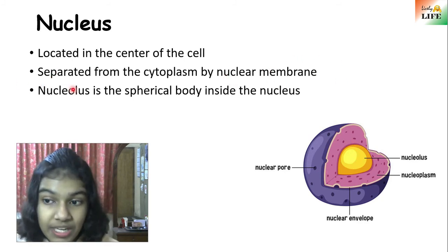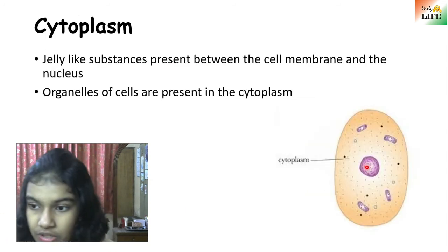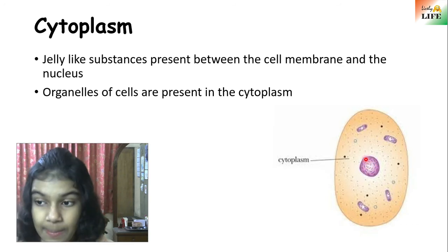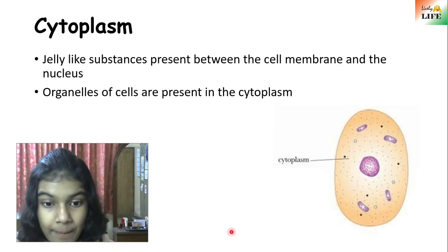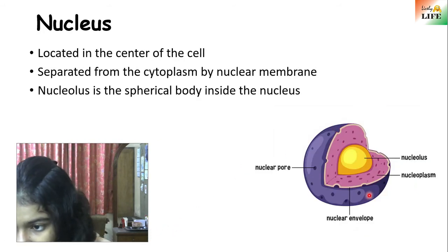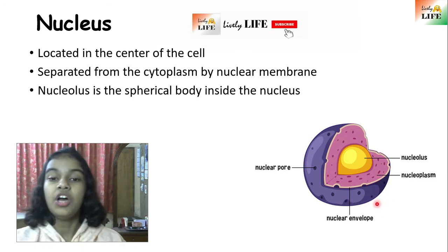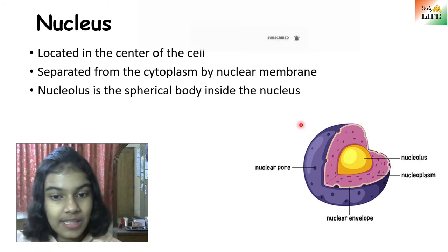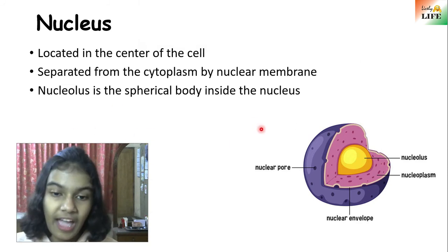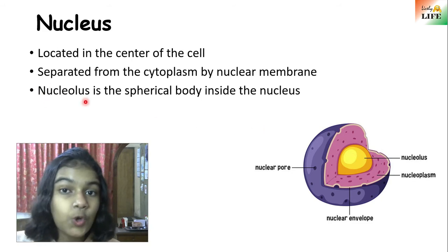You can see in this picture the nucleus and the cytoplasm. The nucleus is separated from the cytoplasm by a membrane known as the nuclear membrane. So just as a cell has a cell membrane, a nucleus has a nuclear membrane. There is also another part of the nucleus called the nucleolus.